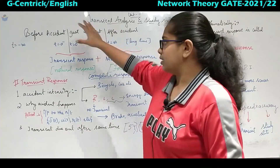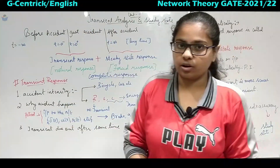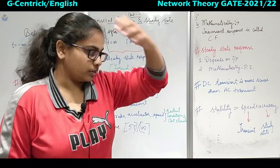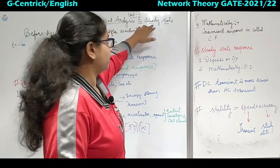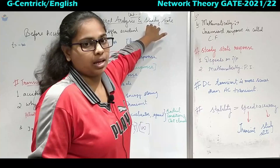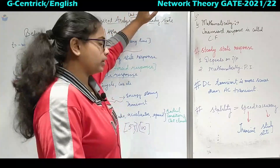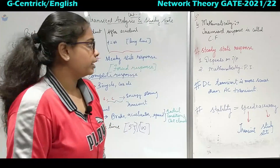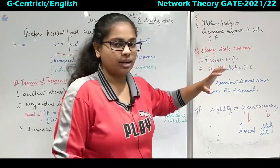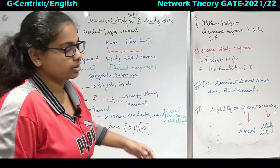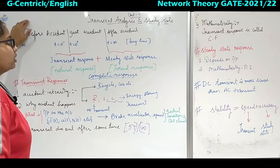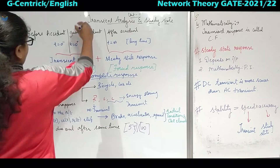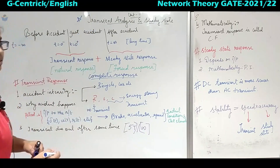Now, till now we have completed all the way up to steady state analysis — that is this steady state, which means time is equal to infinite — that is like AC analysis that we have completed till unit 10. This is the transient analysis through which GATE will ask many questions. Hence this is a very important chapter.